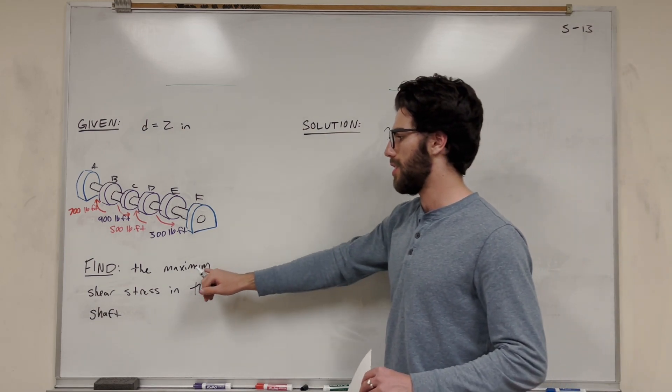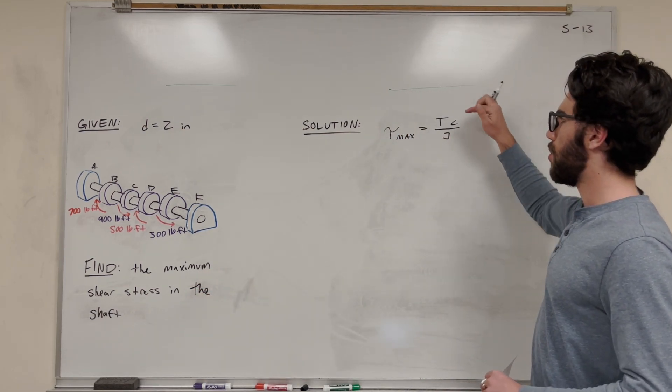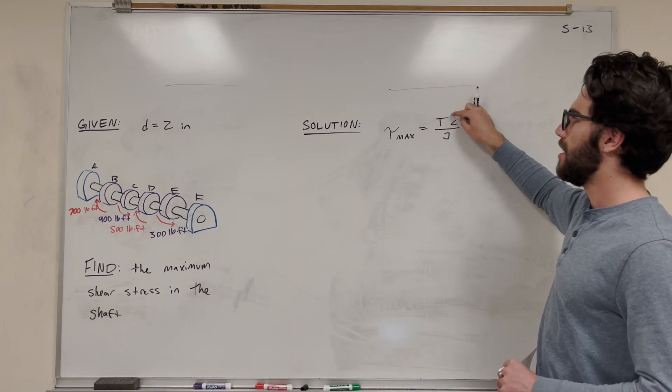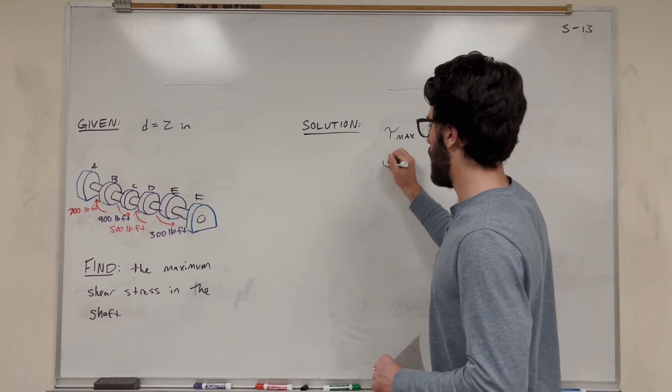First of all, if we want to find where the shear stress is maximum in the shaft, we need to find where the torque is max, right? Because if torque is maximized, then our shear stress is going to be maximized. To find where torque is going to be max, we're going to make a graph.